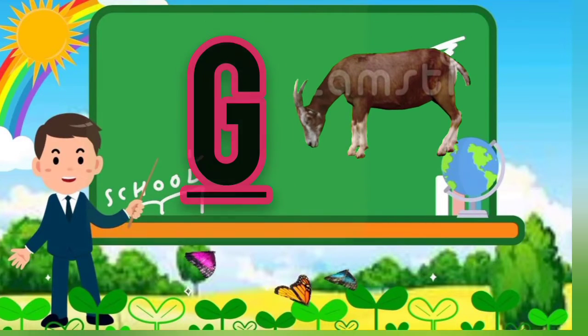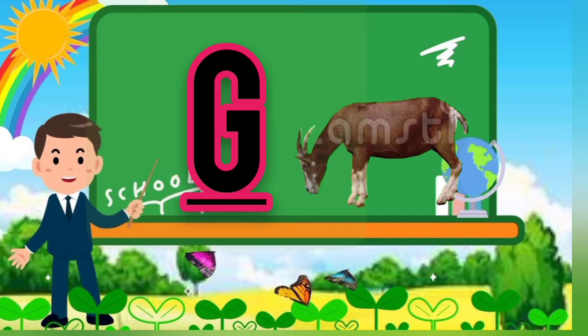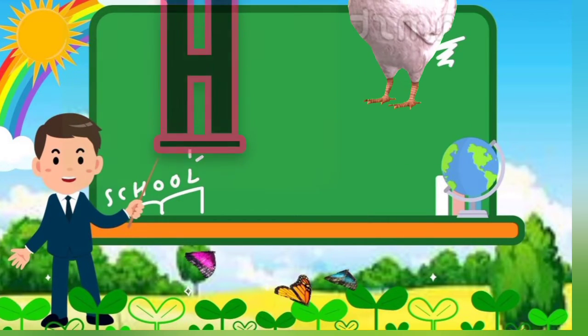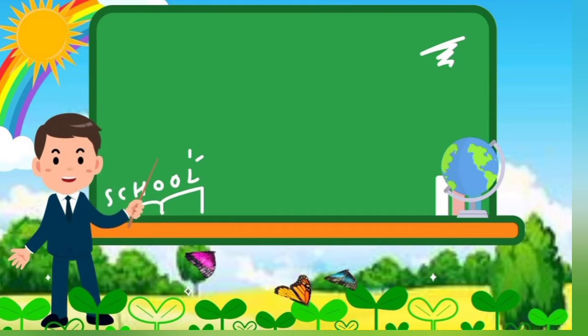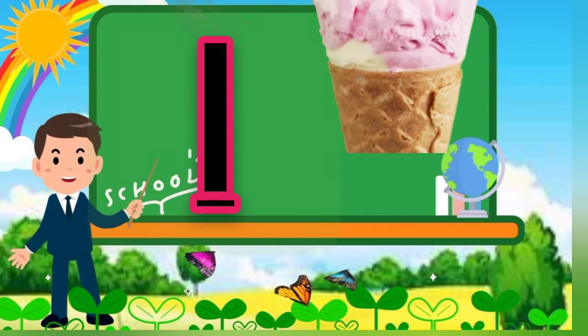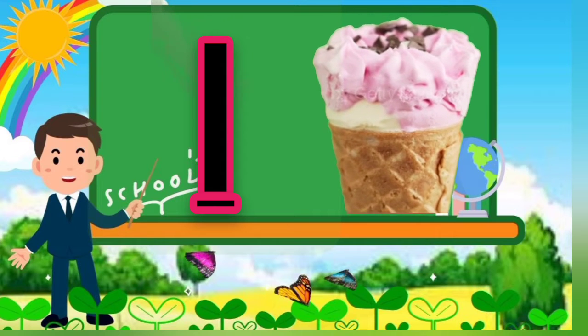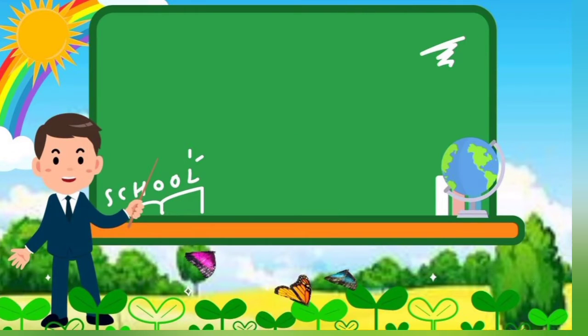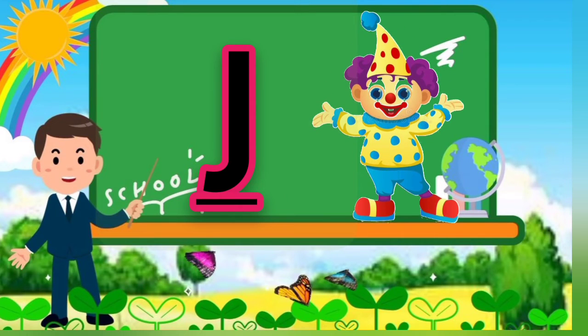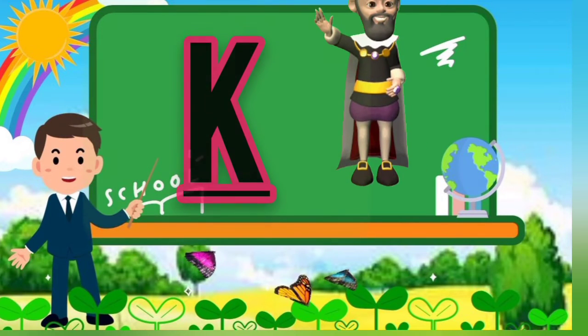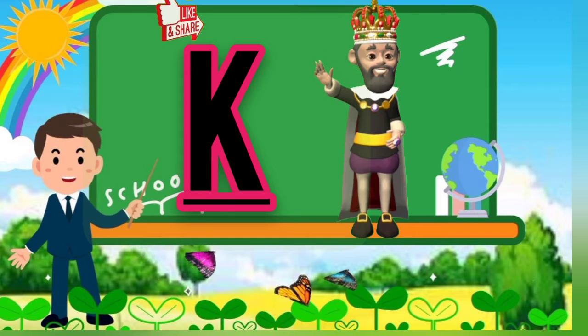G, G for goat, H, H for hen, I, I for ice cream, J, J for joker, K, K for king.